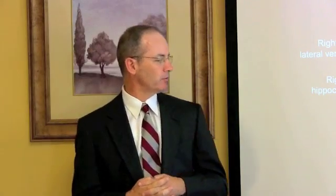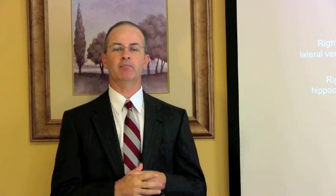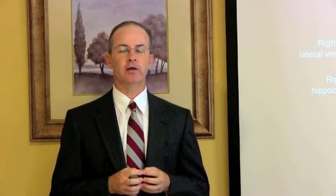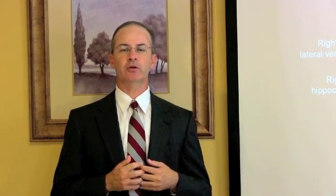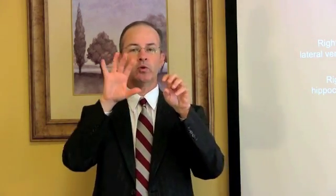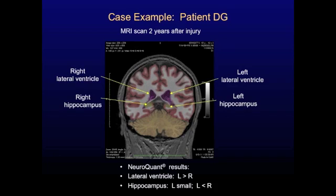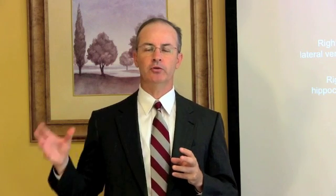Here's another one of our patients who had mild traumatic brain injury. His MRIs were read as normal, no signs of atrophy. The NeuroQuant extended analysis found signs of atrophy and also found signs of asymmetry — one side of the brain smaller than its contralateral counterpart. This is a middle-aged man; here's an MRI scan done two years after injury. You can see that the left lateral ventricle is bigger than the right, and the asymmetry was statistically significantly abnormal according to NeuroQuant. The left hippocampus was smaller than the right and was abnormally small compared to the group of normal controls.